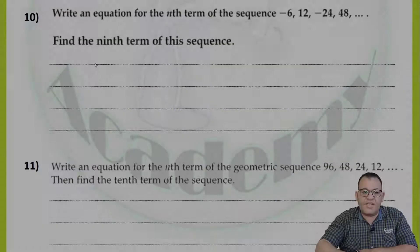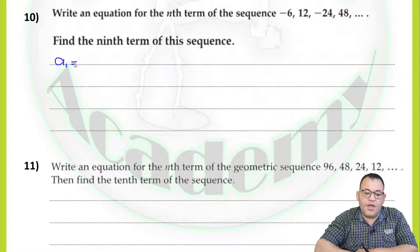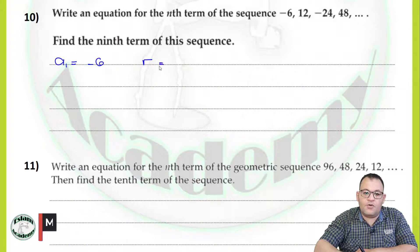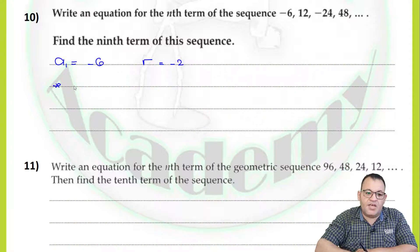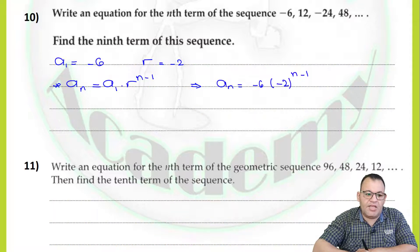Write an equation for the nth term of the sequence negative 6, 12, negative 24, 48, then find the ninth term. First, a1 equals negative 6. To find r: 12 divided by negative 6, or negative 24 divided by 12, or 48 divided by negative 24 — all equal negative 2. By substitution into the formula, an equals negative 6 times negative 2 to the power n minus 1.